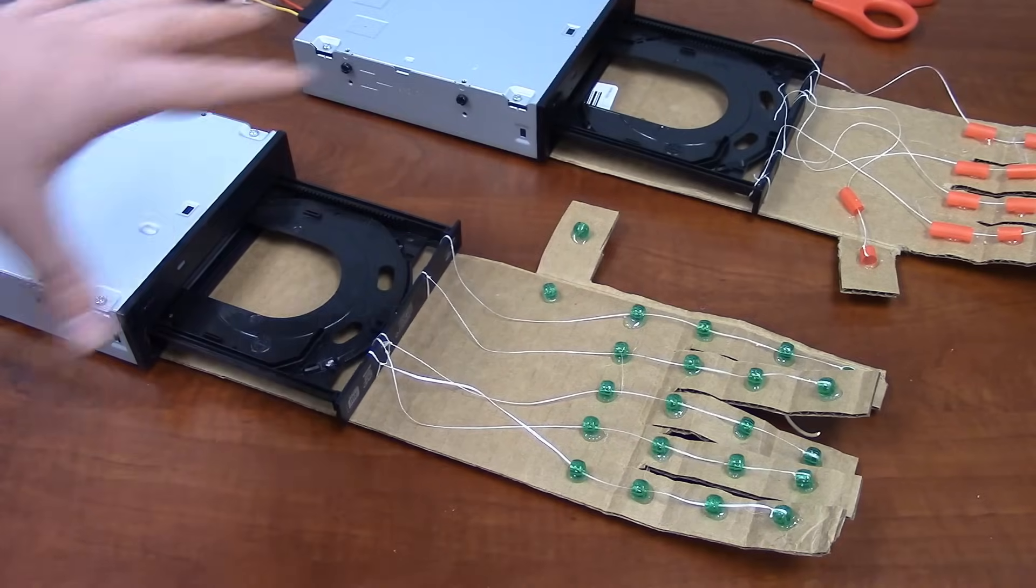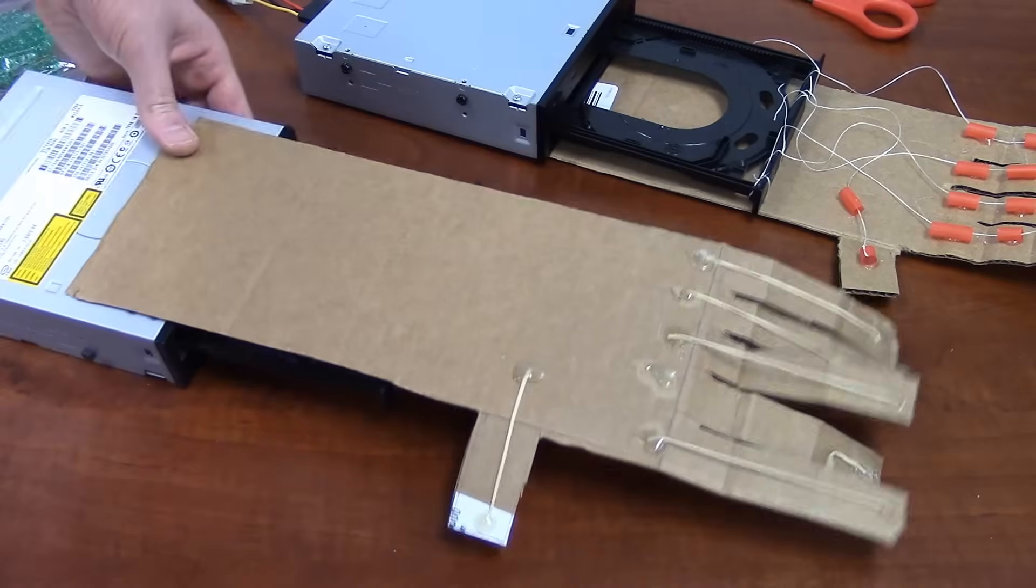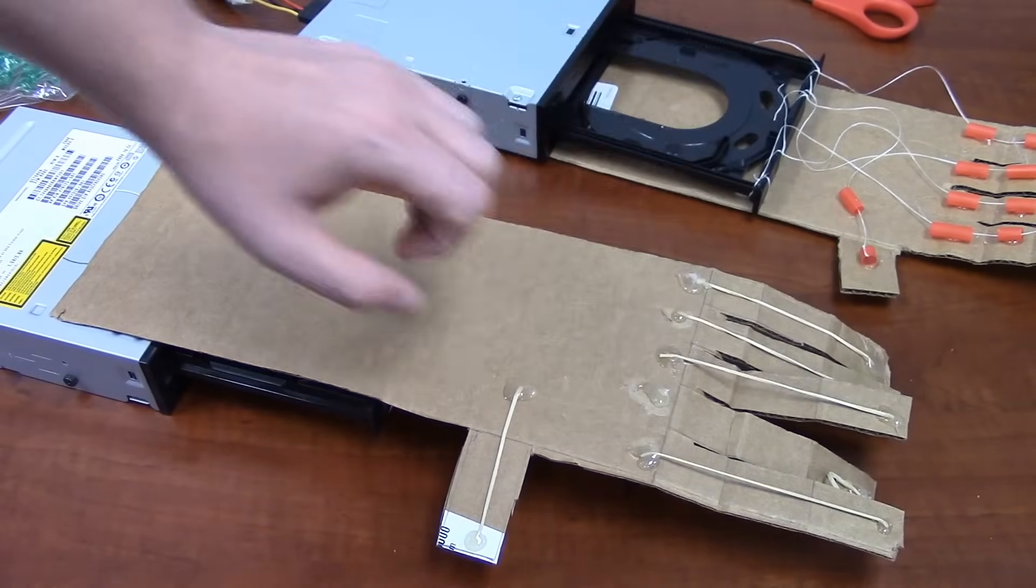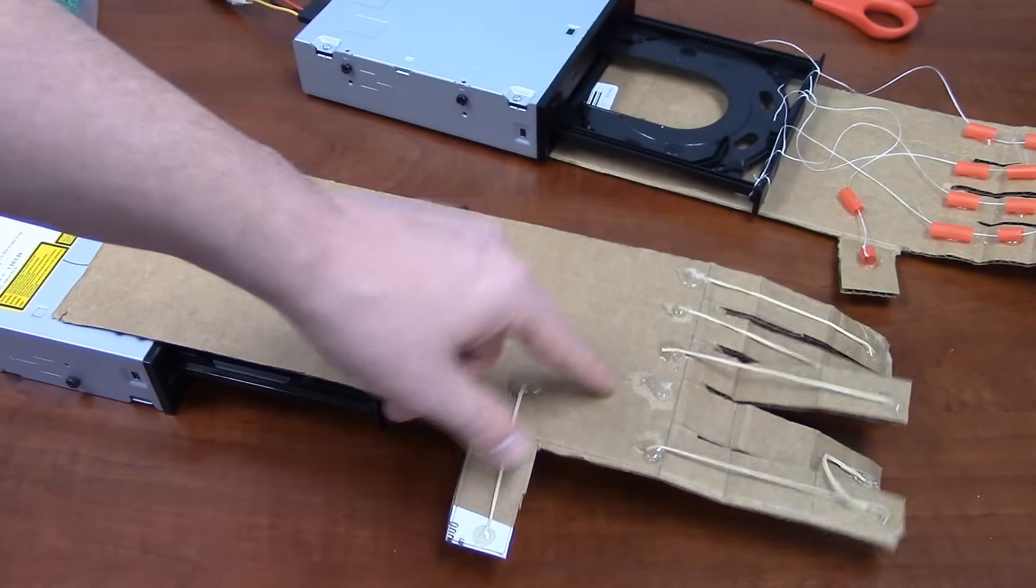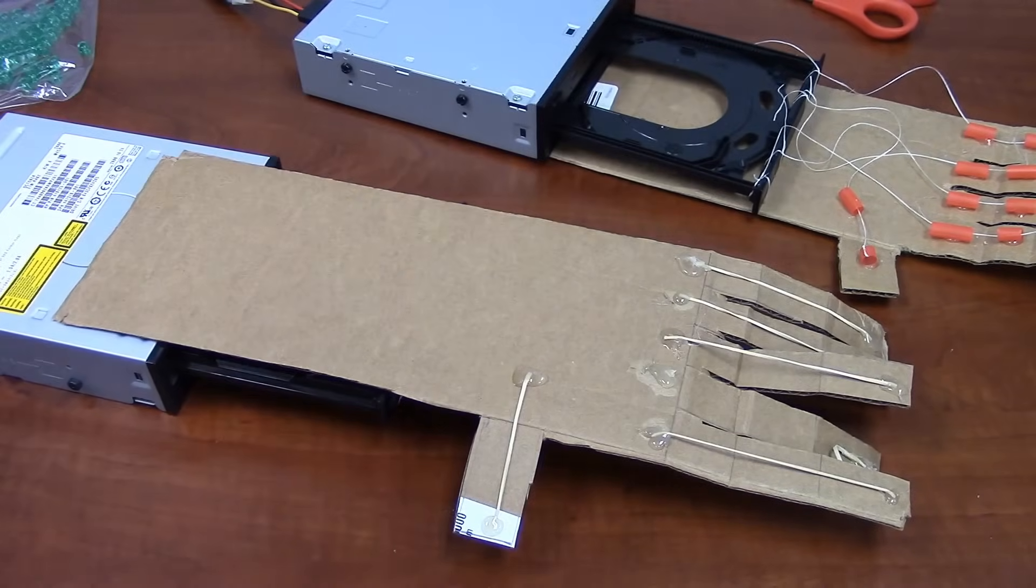They're a little harder to thread. And one of the tutorials I saw on robot cardboard hand suggested using rubber bands to bring the fingers back into place. Now this works, but they don't last very long because they're glued. I tried tape and they just snapped right back off.